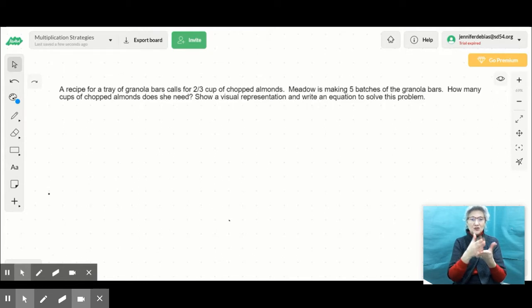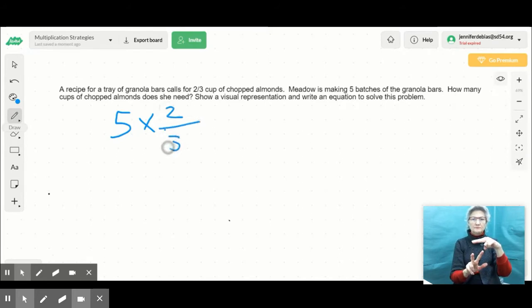So after reading this and thinking, I know that she needs 2/3 cup of almonds for one batch, but she needs to make 5. So I think what we need to do is multiply 5 times 2/3. We are going to take a look at a quick visual representation. I'm going to just show you one that I made on the computer just because it's a little bit easier for me to take a look at making sense of this problem.